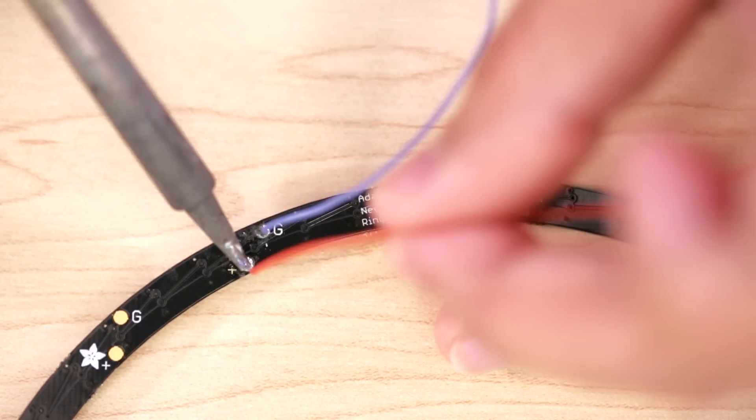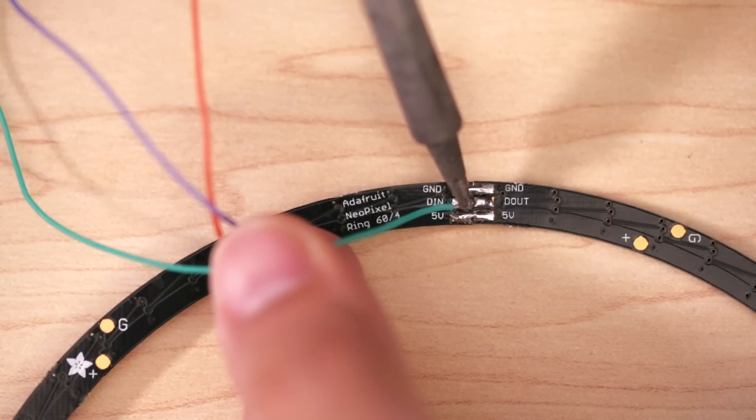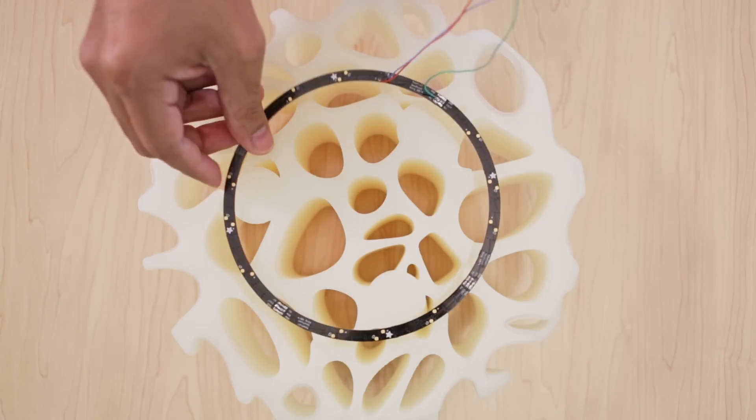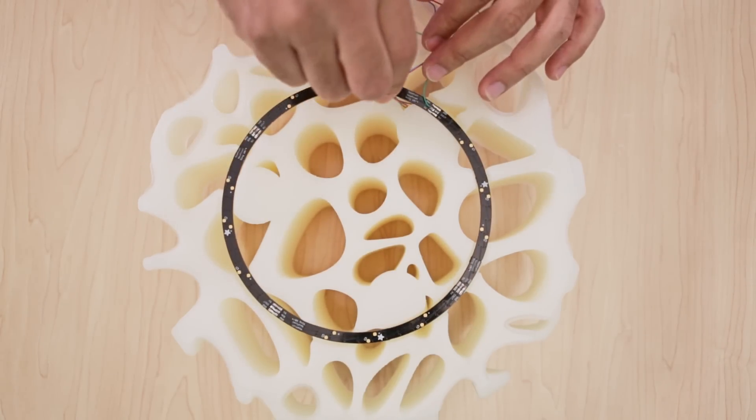Then we can connect the wires to ground, power, and data in. The wires can be routed through the holes in the seat.